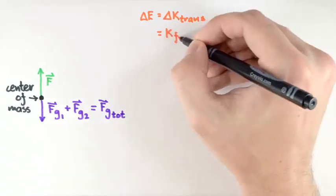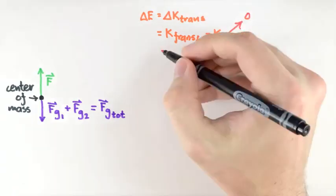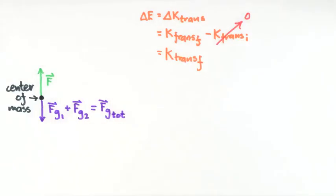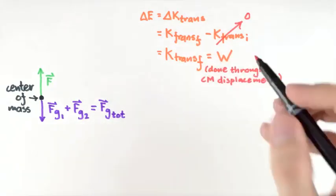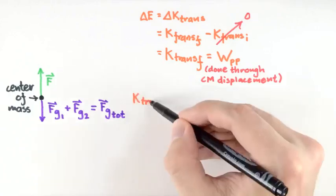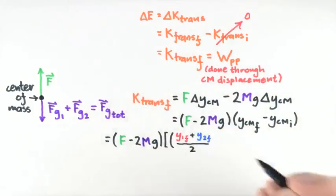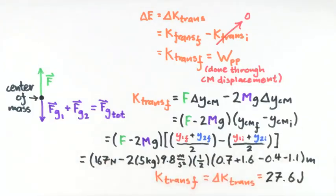Delta K trans is K trans final minus K trans initial. However, since the system is initially at rest, the initial translational kinetic energy is zero. So the change in translational kinetic energy is just equal to the final translational kinetic energy, which is one of the quantities we want to solve for. To do this, we need to find the total work done by all the interactions acting through the center of mass displacement. Since both forces here are constant, we find the work by taking the scalar product of each force with the center of mass displacement. When we do that and plug in all the known values, we can solve for the final translational kinetic energy.